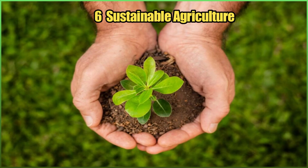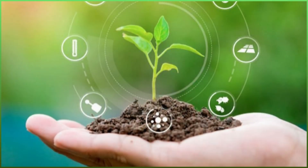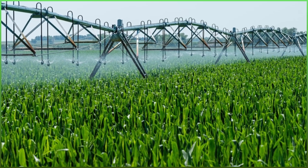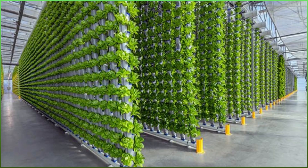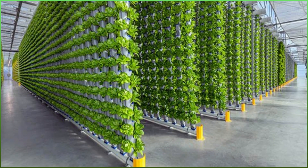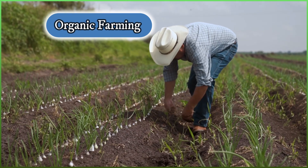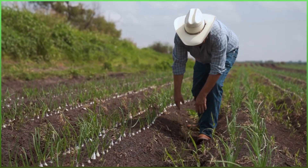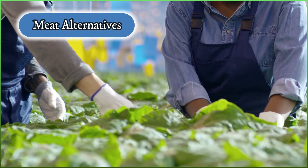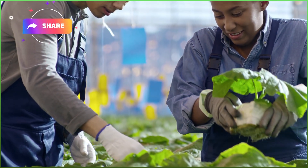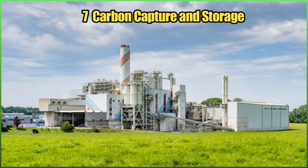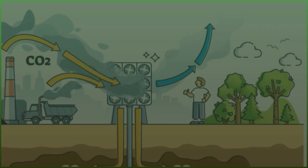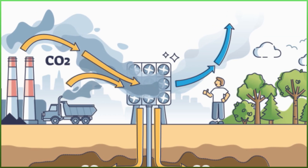Number six: sustainable agriculture — practices and technologies that reduce the environmental impact of food production. This includes precision agriculture, using data analytics and sensors to optimize resource use in farming; vertical farming, growing crops in stacked layers in controlled environments using less land and water; organic farming, which avoids synthetic pesticides and fertilizers; and meat alternatives, plant-based protein sources with a lower environmental footprint than traditional livestock farming.